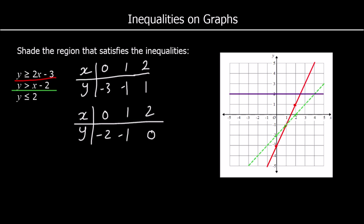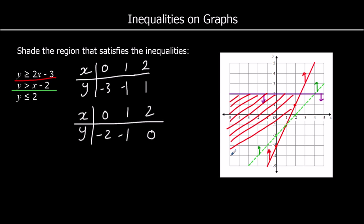Now we work out which region to shade. We want where y is bigger than 2x minus 3, so above the first line. For the second line, y is bigger than x minus 2, so again going up from that line. And y is less than 2, so below the purple line but above the other two lines. The region is above the green and red lines but below the purple line.